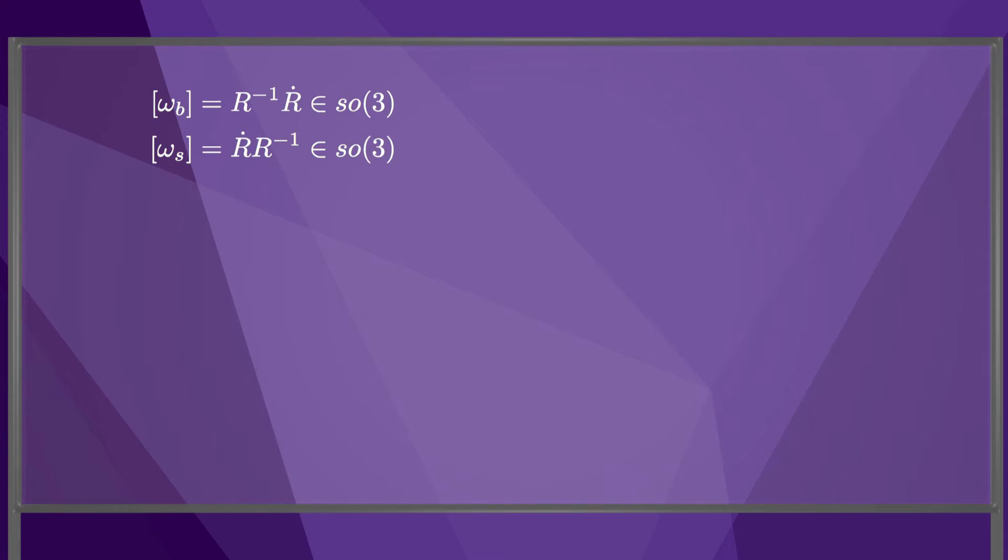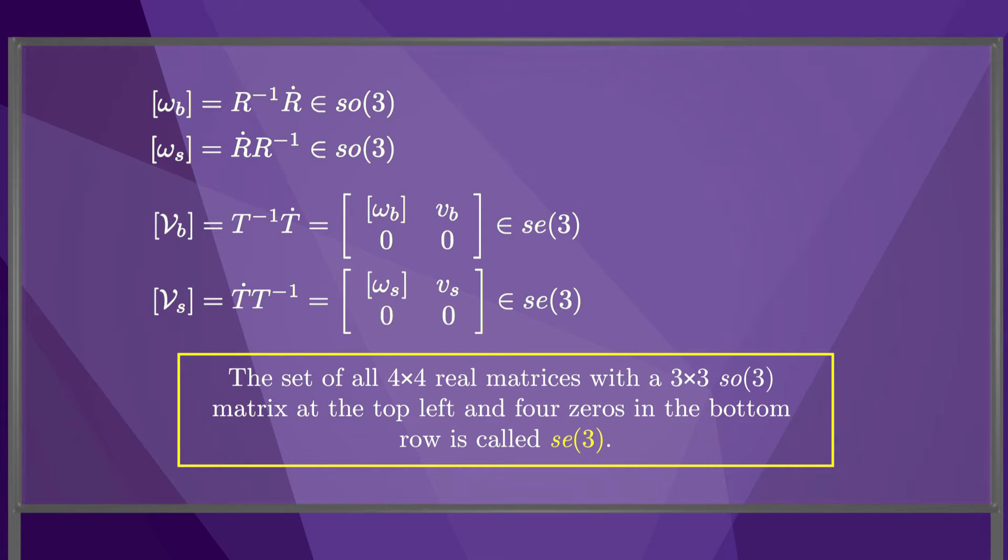Similarly, if T represents the body frame B and the space frame S, we have four by four matrix representations of the twists, bracket VB equals T inverse times T dot, and bracket VS equals T dot times T inverse, where little se3 is the space of four by four matrix representations of twists.